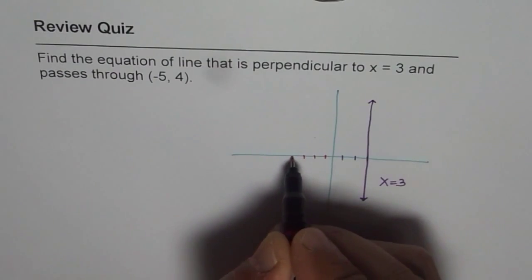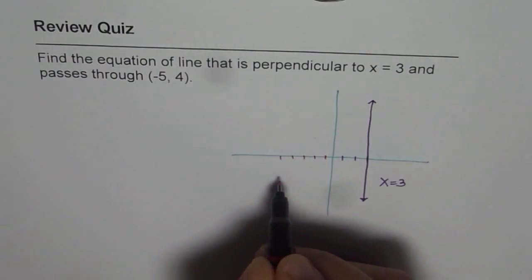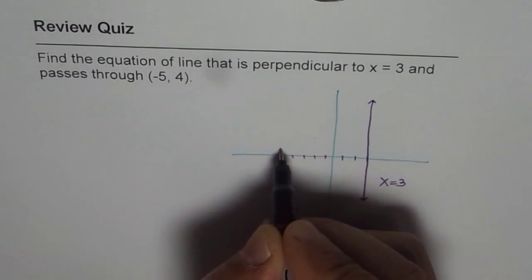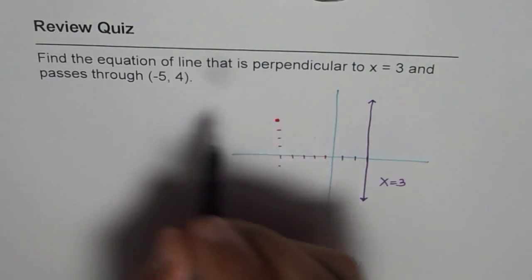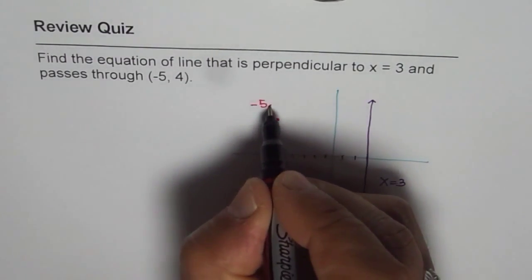1, 2, 3, 4, 5 units and 4 units, that is plus side, 1, 2, 3, 4. Let's say this point is (-5, 4), correct?